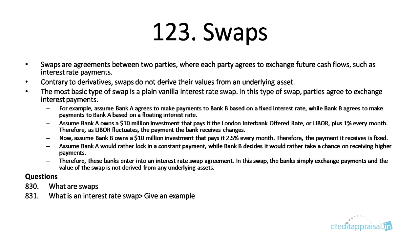The most basic type of swap is a plain vanilla interest rate swap. If you can understand that, that is more than sufficient. In an interest rate swap, the parties agree to exchange interest payments. For example, Bank A agrees to make payments to Bank B based on a fixed rate of interest, whereas Bank B agrees to make payments to Bank A based on a floating interest rate.